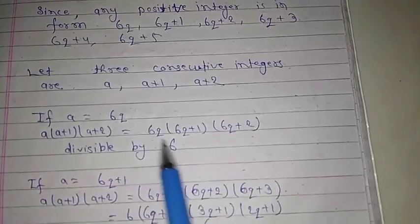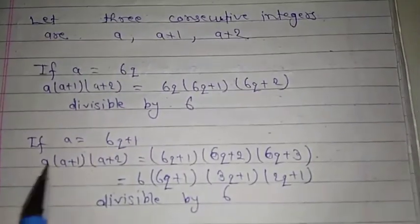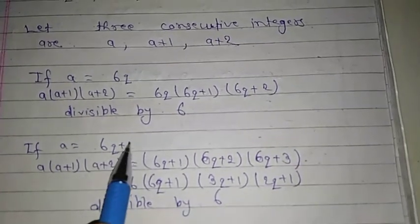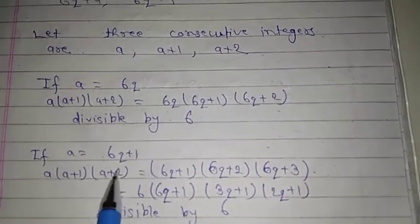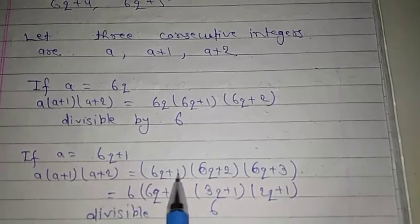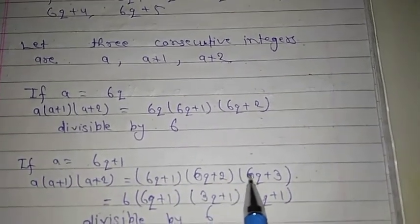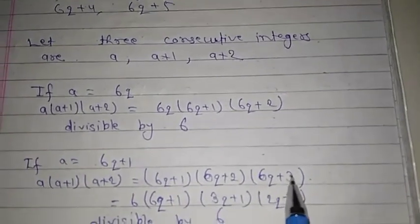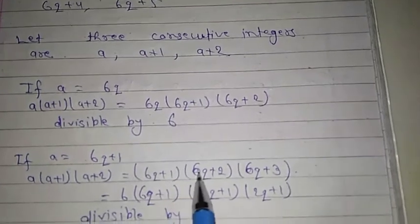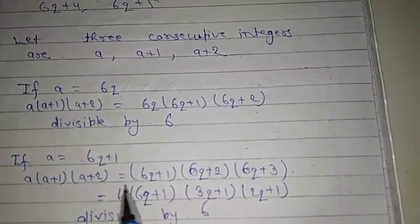If a = 6q+1, then the product of three integers = (6q+1)(6q+2)(6q+3). We take 3 common from one term and 2 common from another, which gives us 6, so it is divisible by 6.